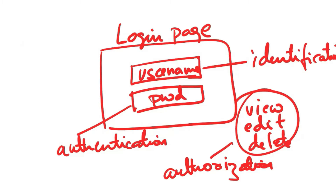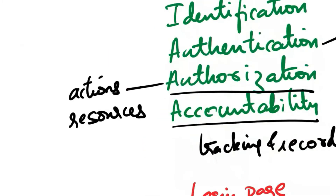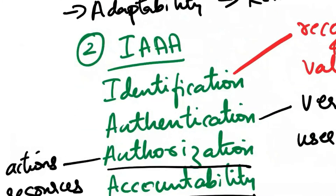These four components work together to ensure users are properly identified, authenticated, and granted appropriate access to resources. Accountability in turn provides a record of these activities to maintain security and compliance.